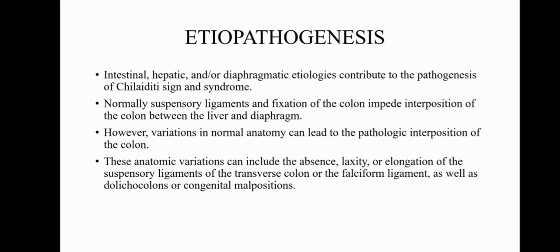Normally the suspensory ligaments and the fixation of the colon impede interposition of the large intestine between the liver and the diaphragm. However, when there are variations in the normal anatomy it can lead to interposition. These anatomical variations can include absence, laxity or elongation of the suspensory ligaments of the transverse colon or the falciform ligament, as well as dolichocolons or congenital malpositions.